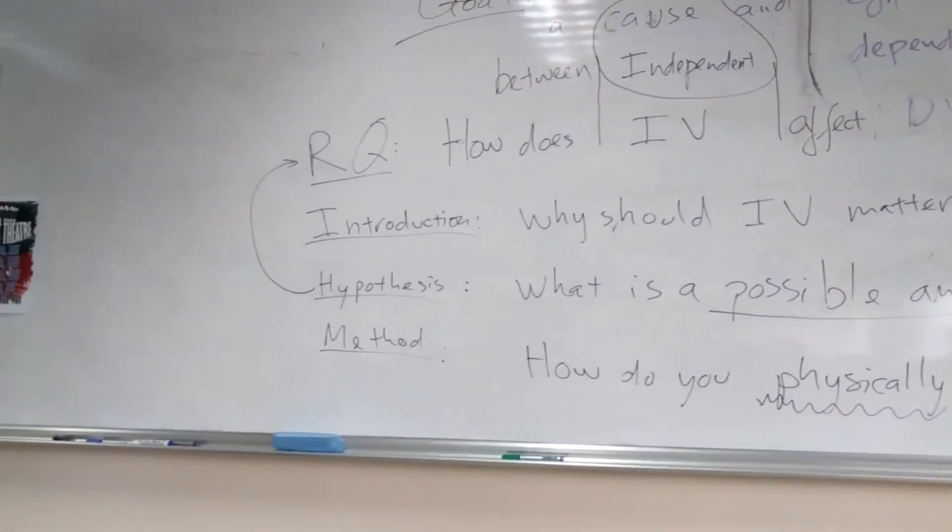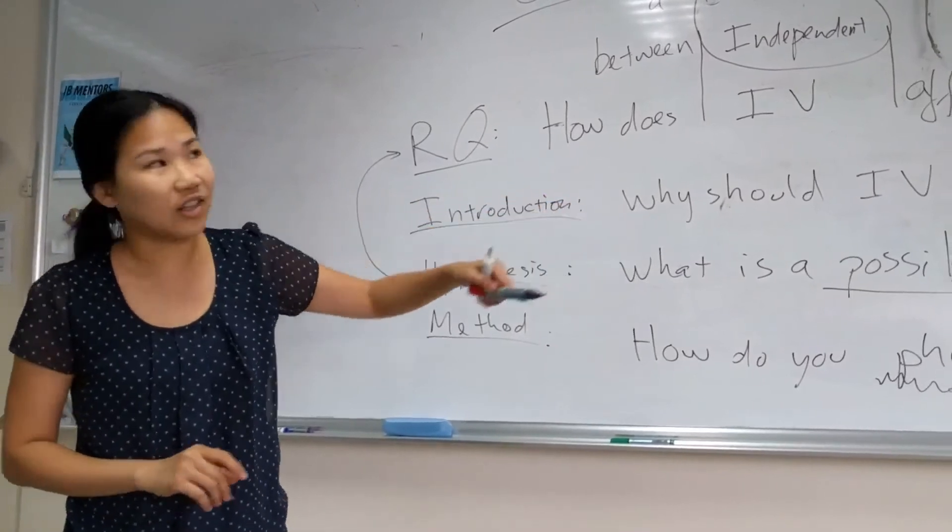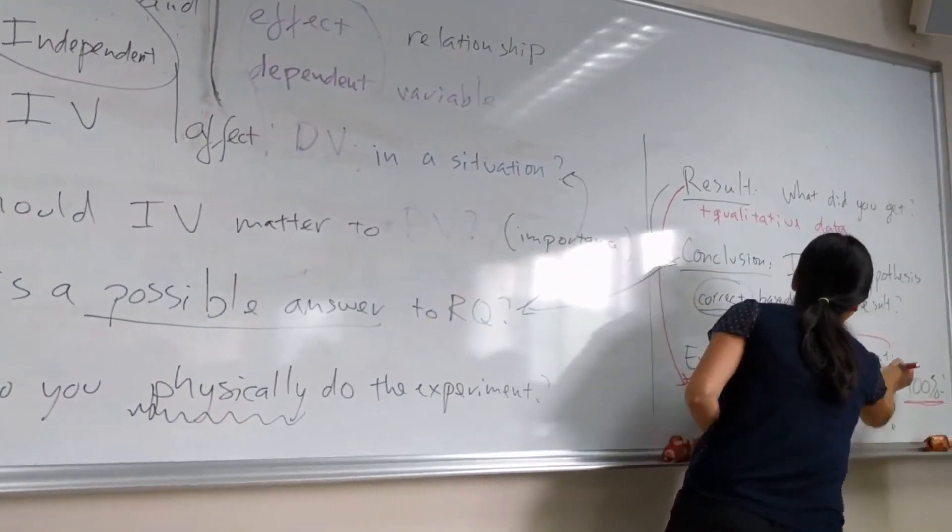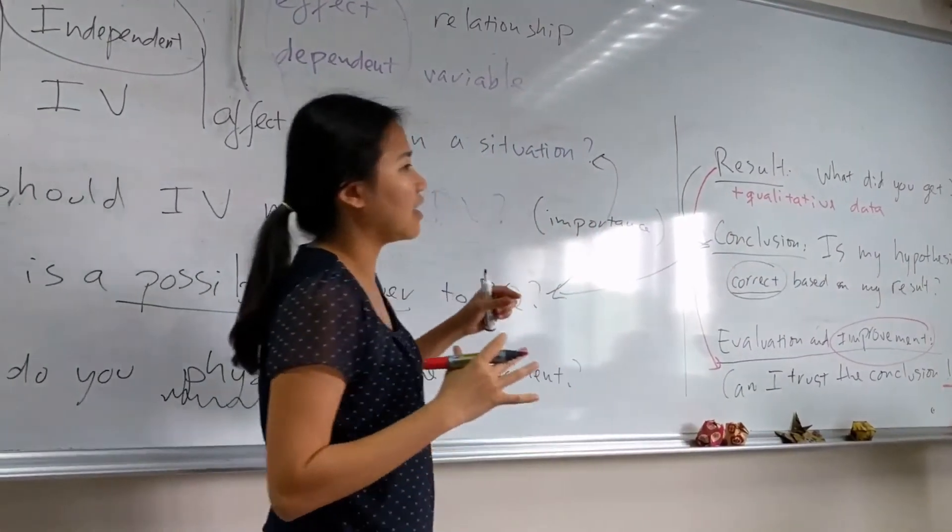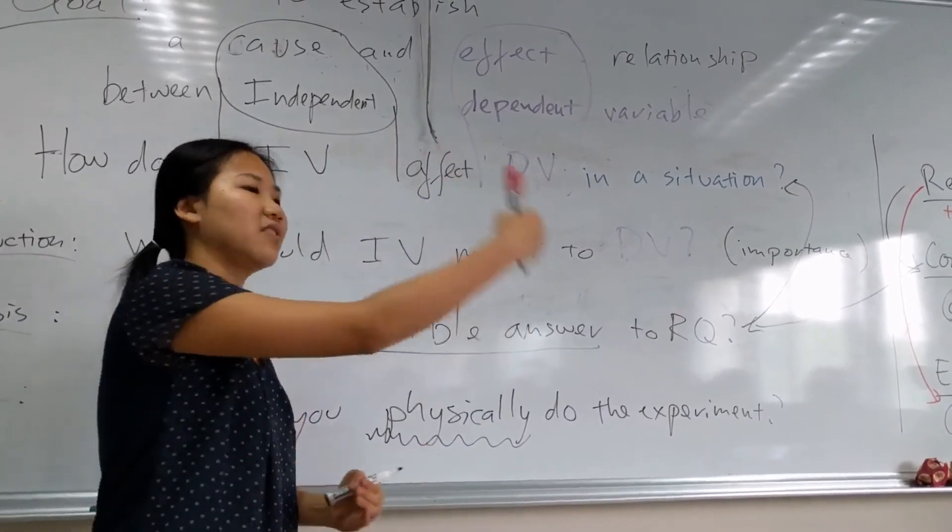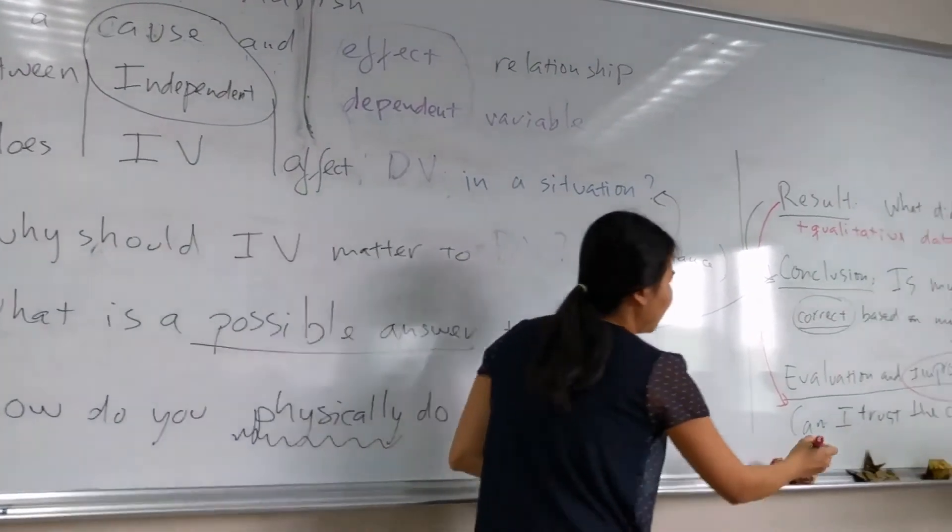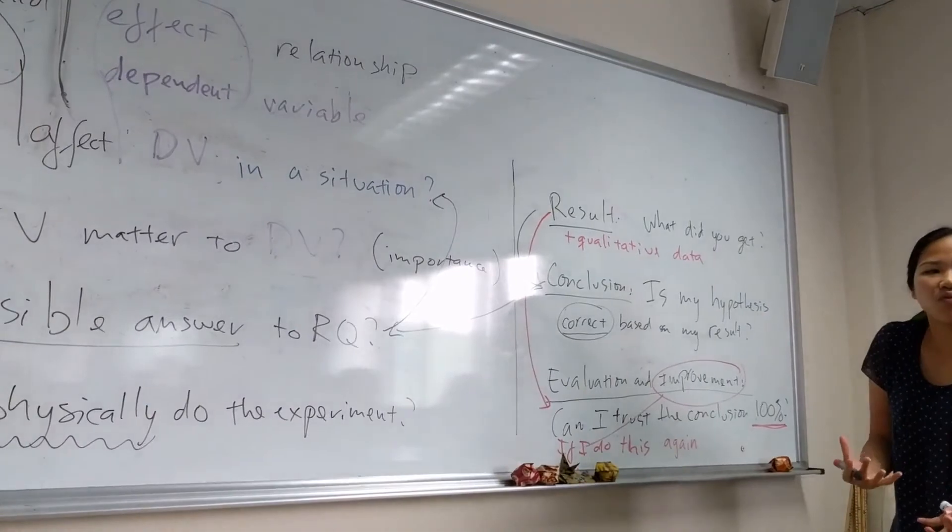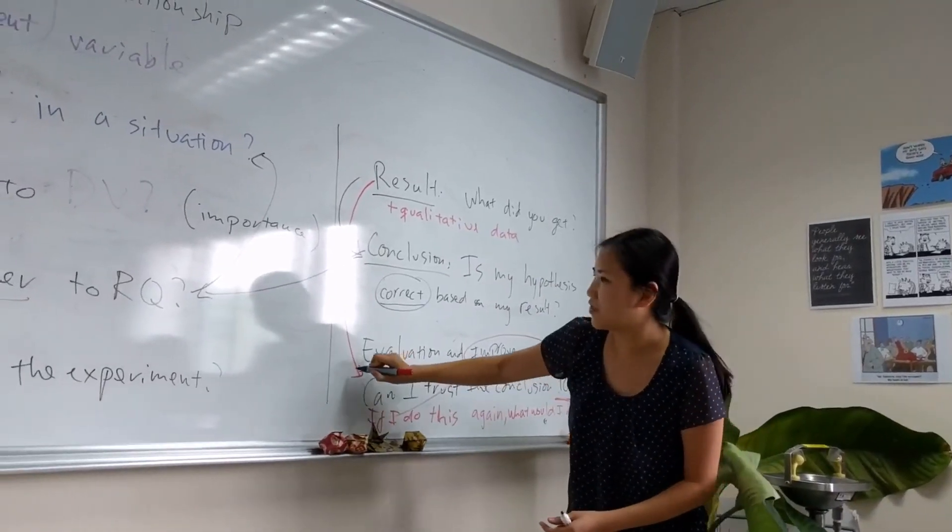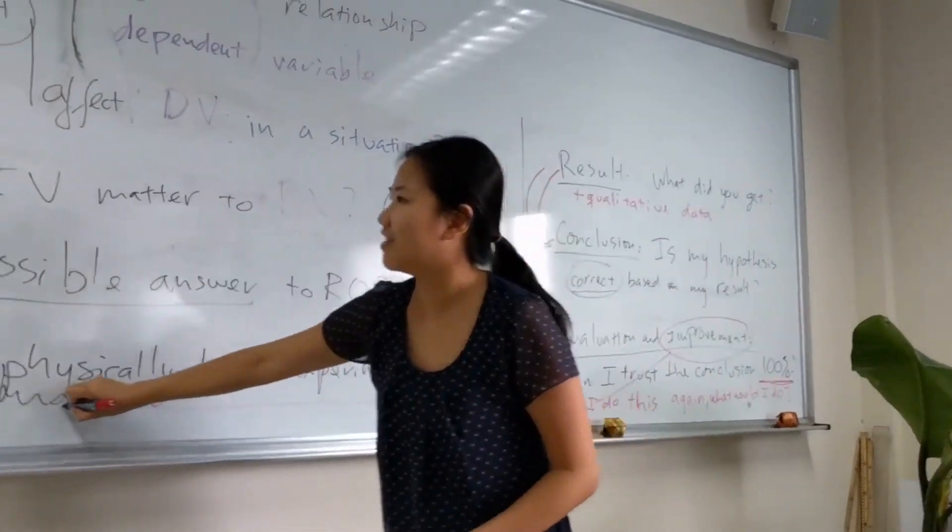Then another thing also is the improvement. So your results should feed into improvement. You can say, yeah, I can't trust my conclusion 100% of the time because of these errors. So in the future, if I were to, what difference, what would I do differently in terms of your, so then you can feed that back into the method.